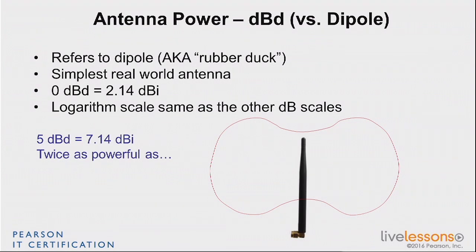Either way is fine. As long as you know which scale we're talking about, you can move from one to the other. So a 5 dBd antenna — that's twice as powerful as what? If you thought about the rule of plus 3 and minus 3, you were right. It's twice as powerful as something that's 3 dBd, i.e., 2 dBd. Because 5 dBd is 7.14 dBi, it's the same as saying it's twice as powerful as something which is 4.14 dBi. It's the same scale — we're saying the same number, just with a different reference.